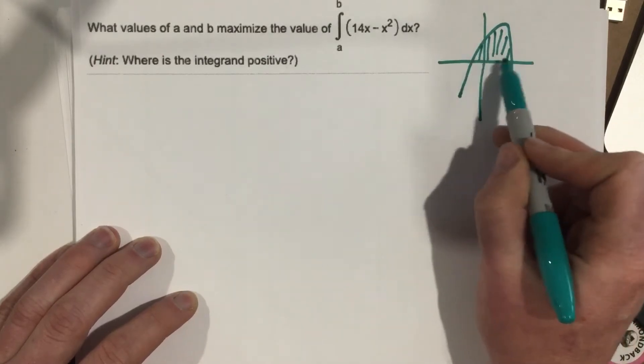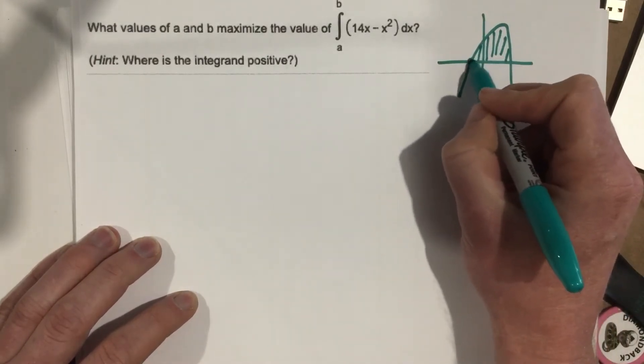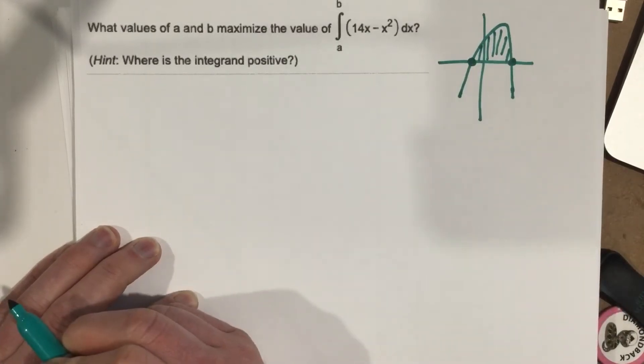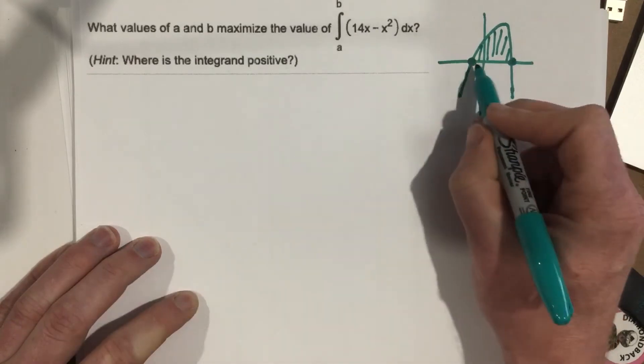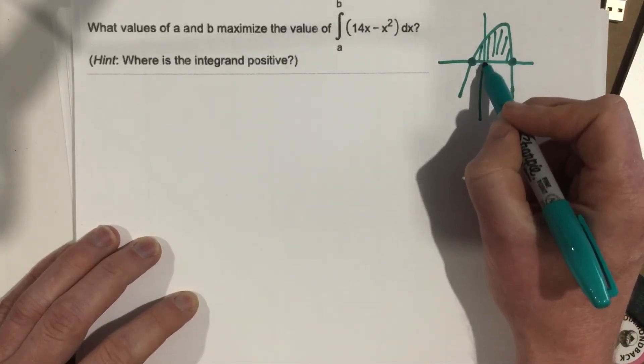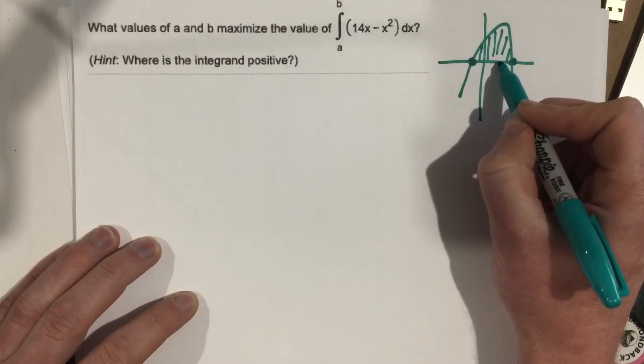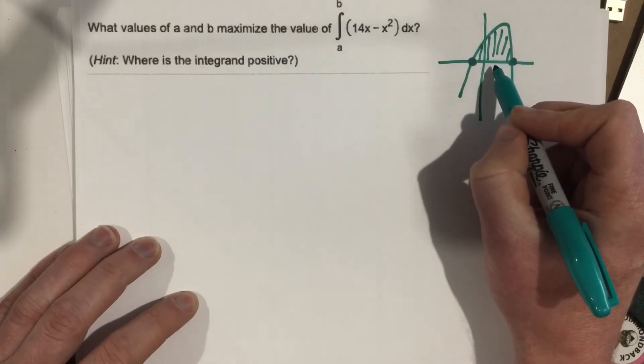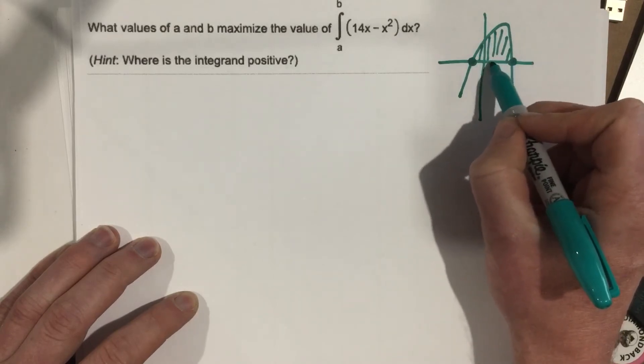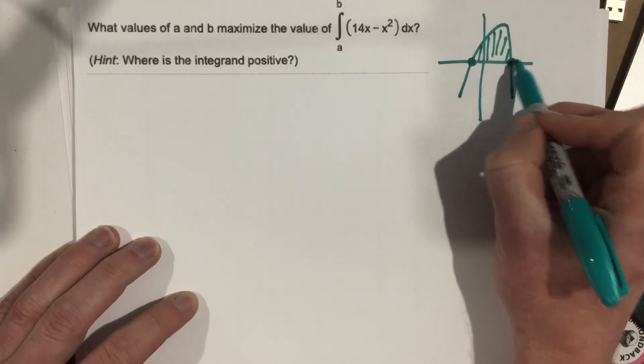So we want this area. Well, that area goes from one root to the other root, if you notice that. That would be the maximal area from one root to the other root. So if we integrated from somewhere inside here to another x value, that wouldn't give us the whole area under the curve. That would only give us a partial piece of the area under the curve. We want to go from one root to the other root.